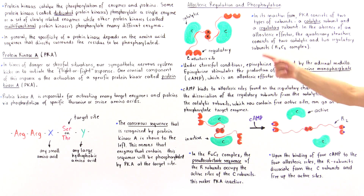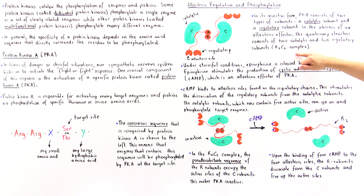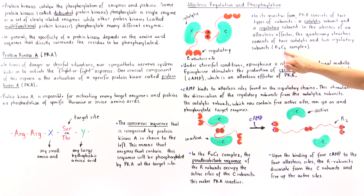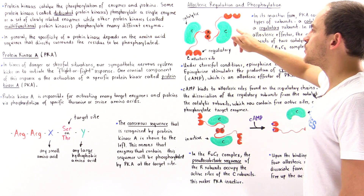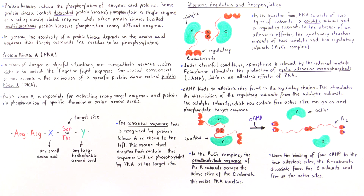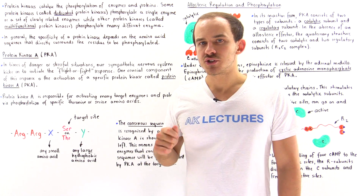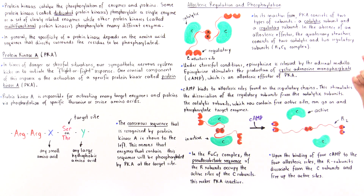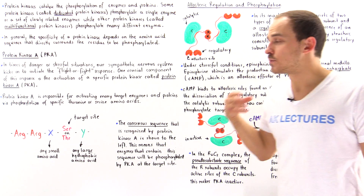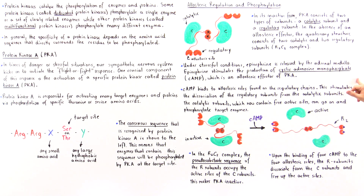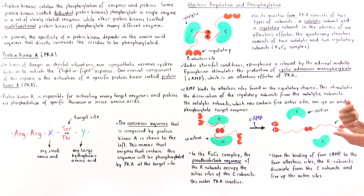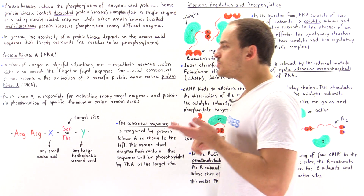Under stressful situations, the adrenal medulla is stimulated and releases the epinephrine hormone. Epinephrine stimulates the production of cyclic adenosine monophosphate, cAMP, and it is cAMP that is the allosteric regulator of PKA. The question is, how exactly does cAMP regulate the activity of PKA and how does it activate this enzyme?